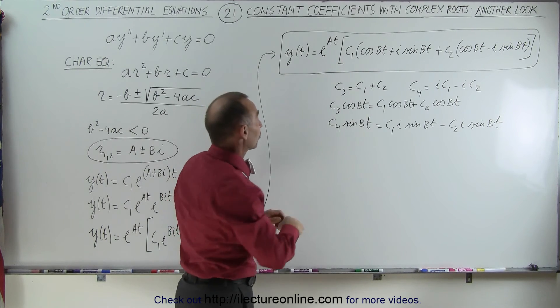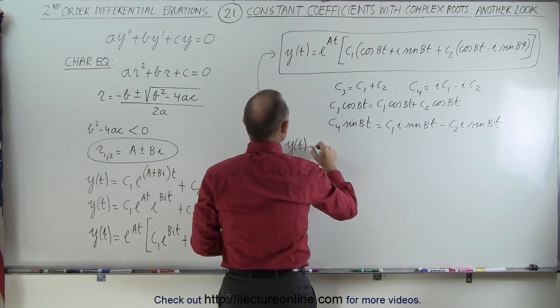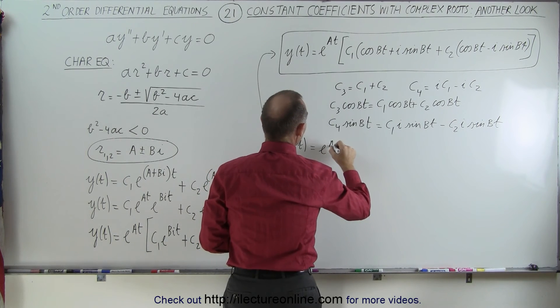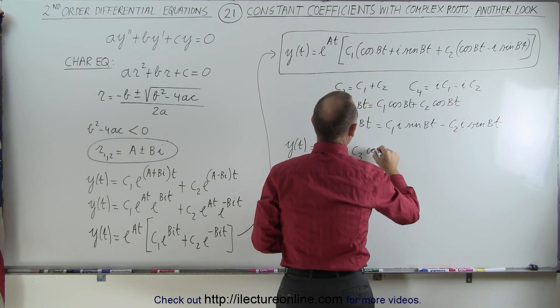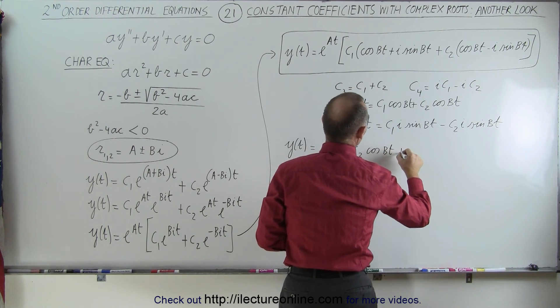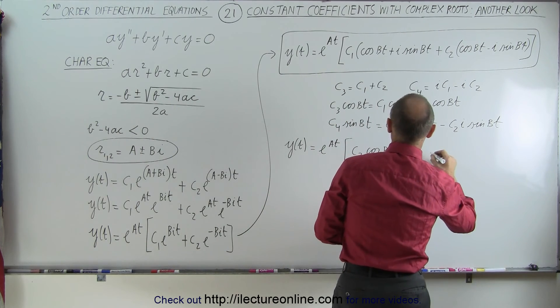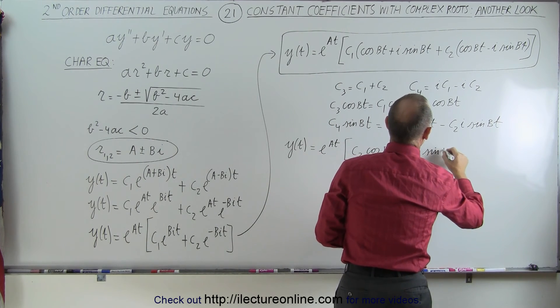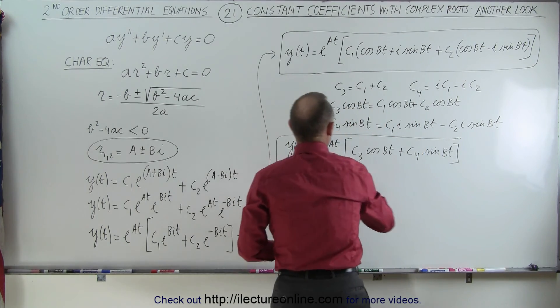Then we can rewrite our solution as follows. We can now write that y as a function of t is equal to e to the at times c3 cosine of bt plus c4 times the sine of bt. And notice there's no longer a mention of an imaginary number.